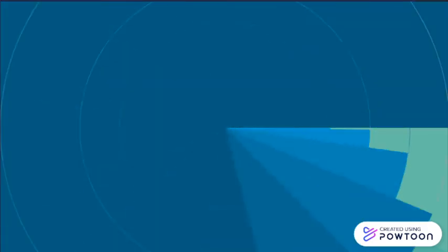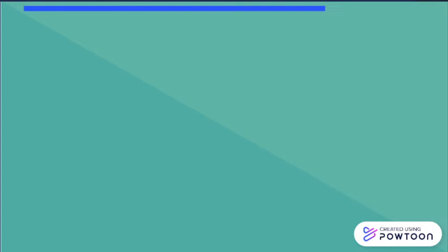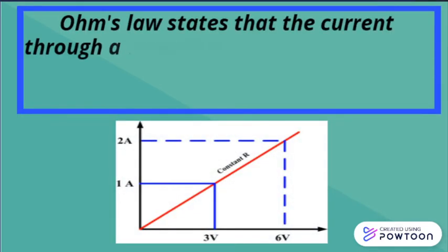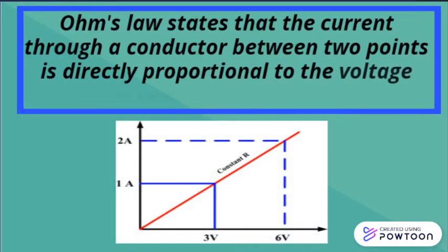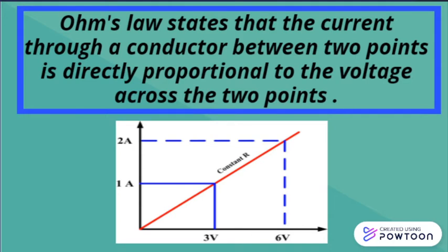Ohm's law explained. Ohm's law states that the current through a conductor between two points is directly proportional to the voltage across the two points.